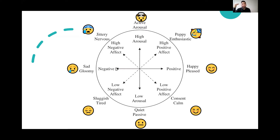If your arousal level is really high and you pair that with something you perceive as positive, high energy plus a positive stimulus will produce enthusiasm, excitement, or thrill. On the opposite side, if you have very low arousal levels — you're tired, fatigued — and you pair that with a situation you perceive as negative, you might feel sluggish, tired, sleepy, or just passive altogether.